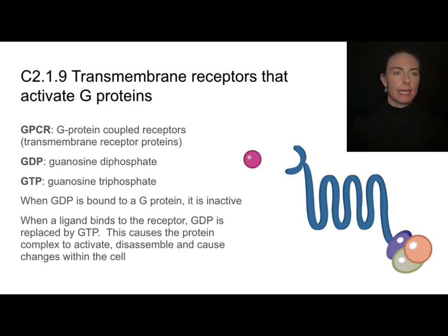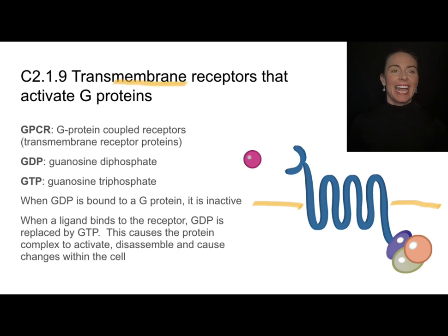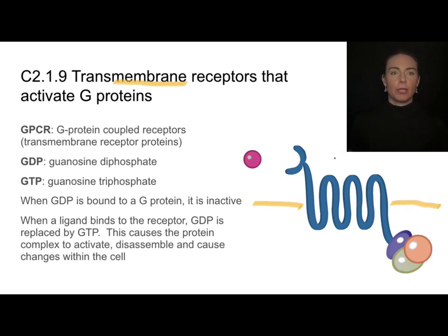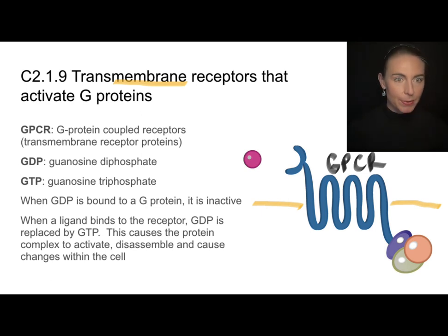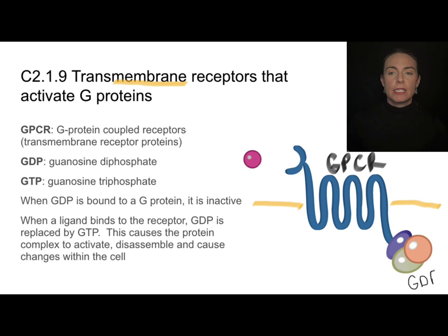Here's a great example of a transmembrane protein. I'm going to draw in the membrane—that yellow line represents the membrane. A transmembrane protein spans both the outside and inside of the membrane. This is an example of a GPCR—a G protein coupled receptor. It's a transmembrane protein. When GDP is bound to this GPCR, it is inactive—it's not doing anything, just hanging out.